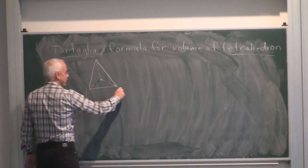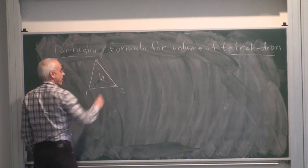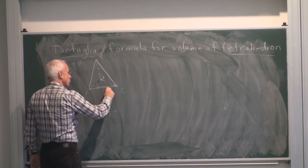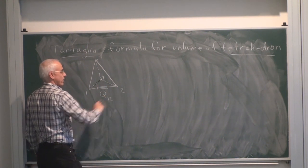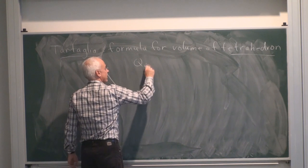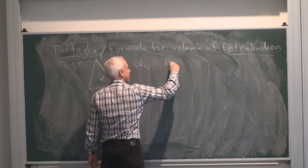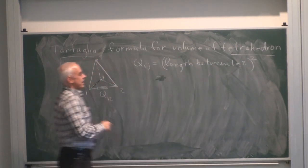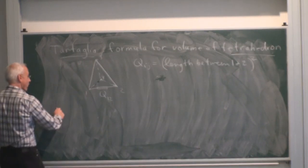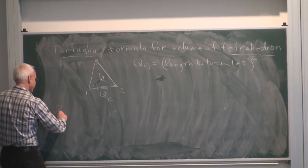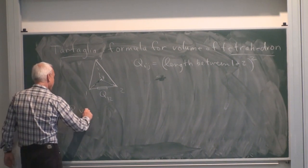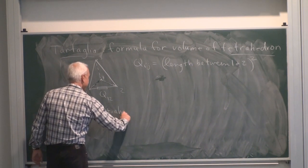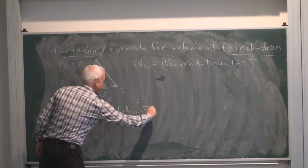Let's call the points 1, 2, 3, and 4. Then there are six squared lengths. If we denote Q₁₂ to be the length between 1 and 2 all squared, then the formula for the volume is the following: 288 times the volume of the tetrahedron squared is the determinant of this rather large matrix.